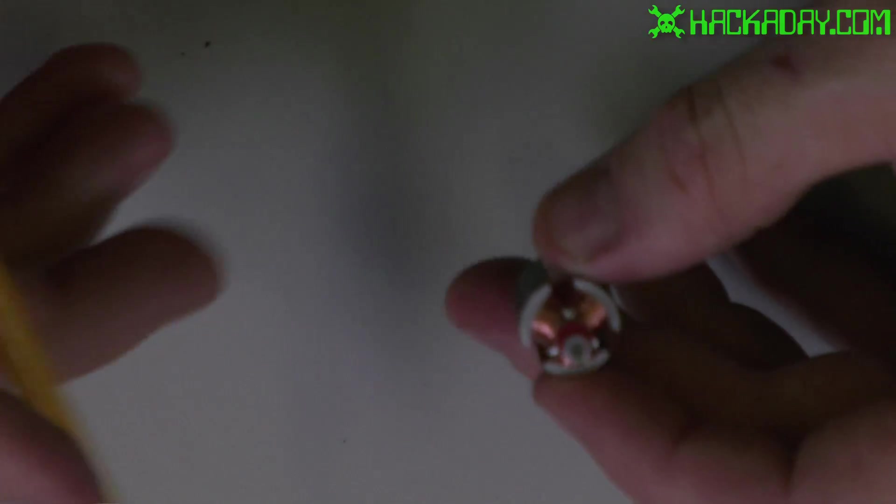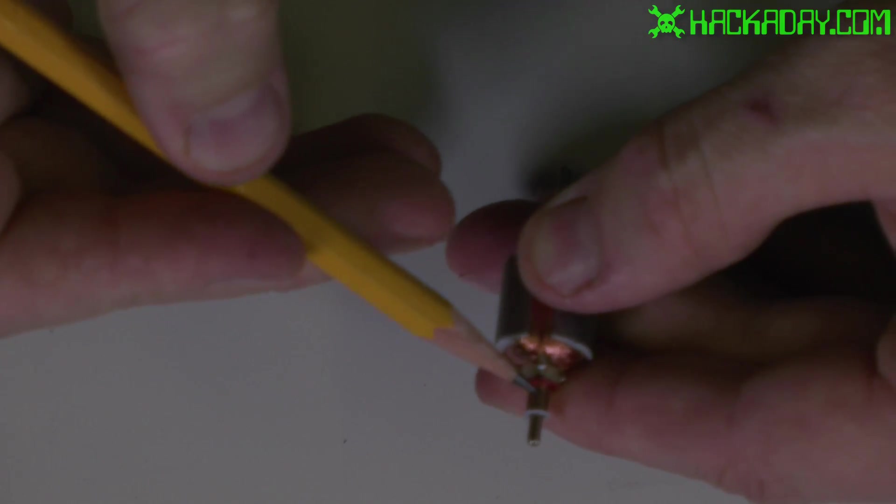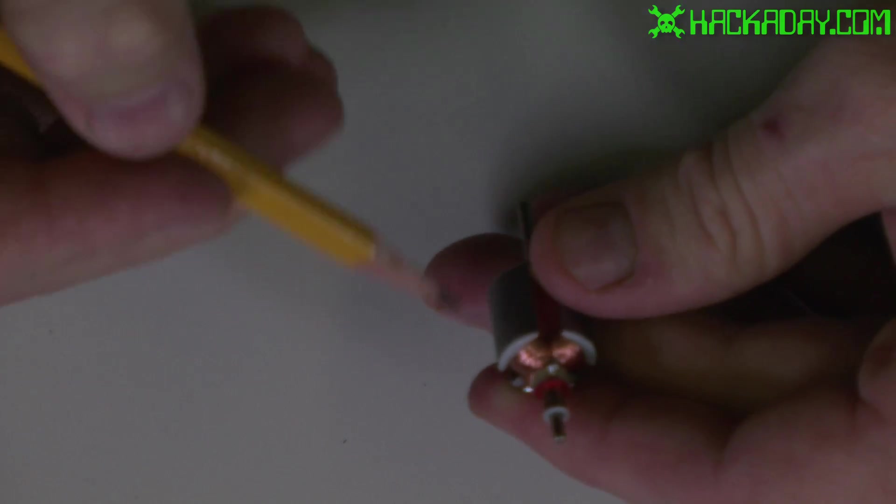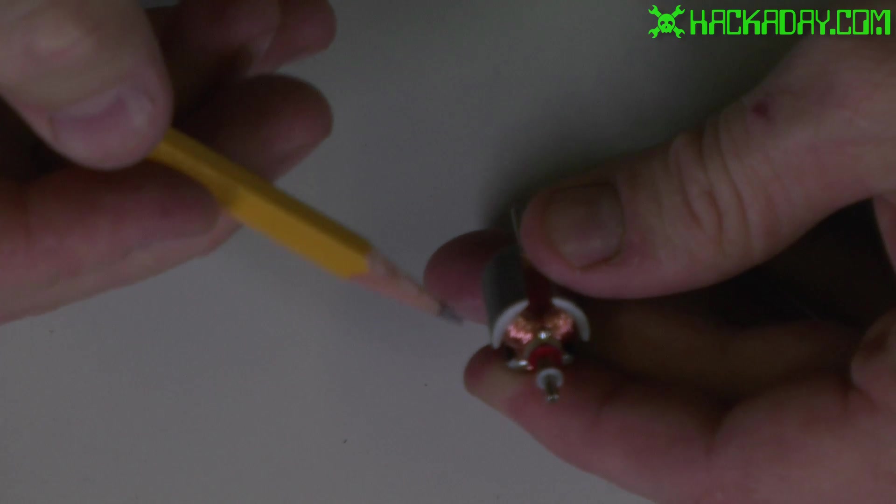So the commutator goes down to these little terminals here which connect up with the coils in the motor.